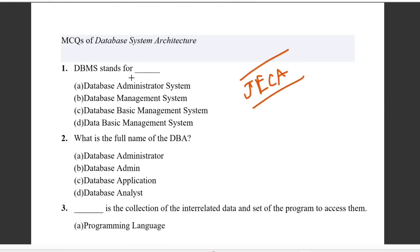First question: what is DBMS? It is Database Management System. Definitely the right answer is Database Management System. Right answer is B. The accurate meaning — database management system. So the right answer is B, definitely database management system.